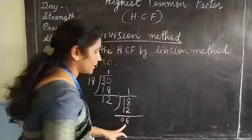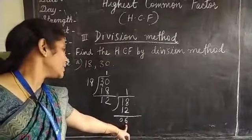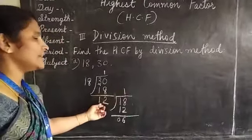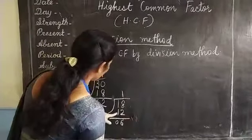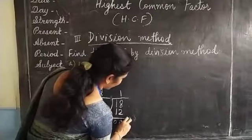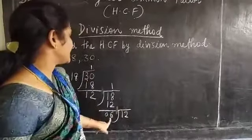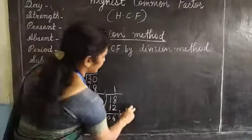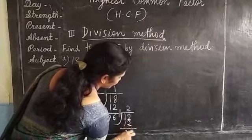Again we got a remainder 6. Again we are going to continue the step in the same way. Divide the divisor by the remainder. Divisor is 12 here. We are going to divide it by 6. How many 6s are in 12? 6 twos are 12. 12 minus 12, 0.